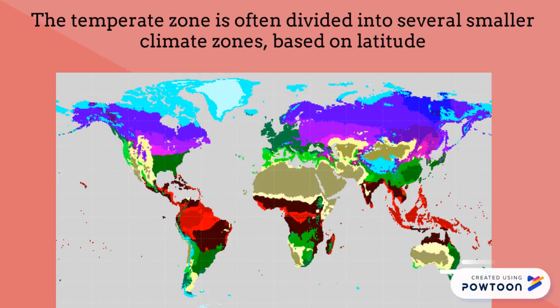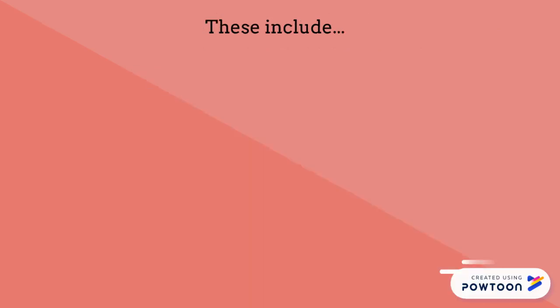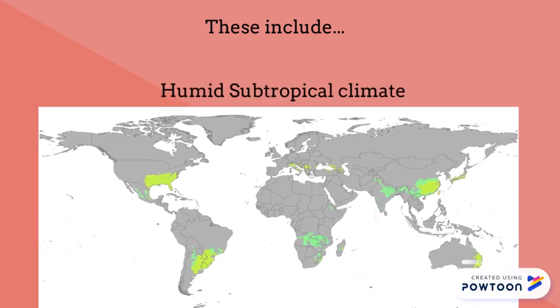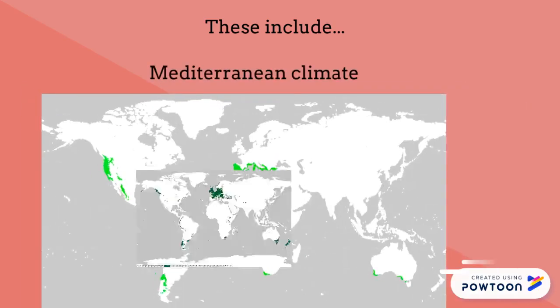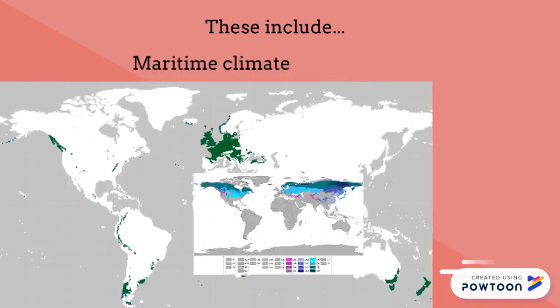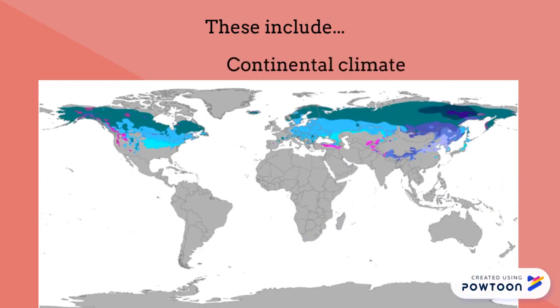The temperate zone is often divided into several smaller climate zones based on latitude. Some of these include humid subtropical climate, Mediterranean climate, maritime, and continental climate.